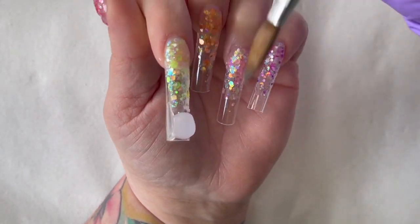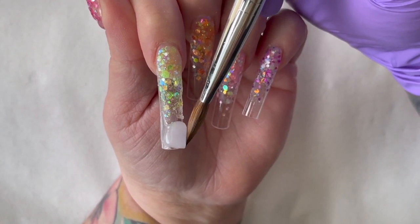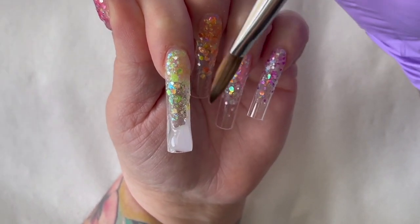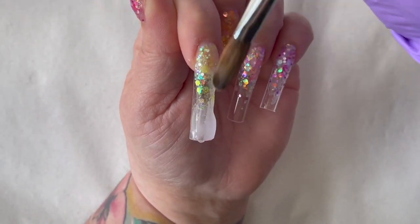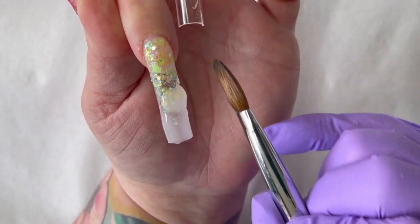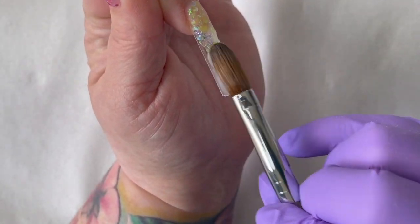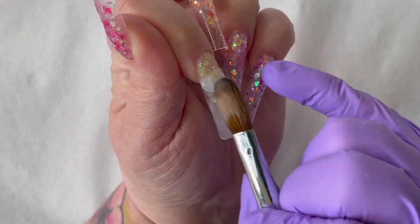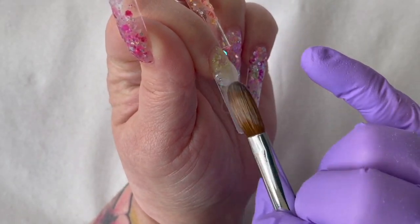And here I'm capping my nails with clear acrylic. And when I'm doing a glass nail, I always start from the free edge and work my way up instead of starting the cuticle area and working my way down. So this is the way how I do my glass nail.